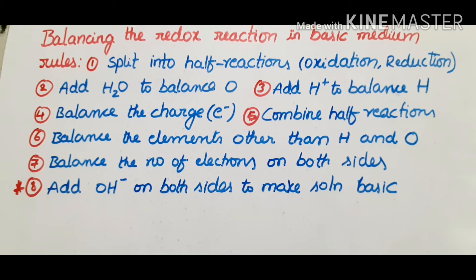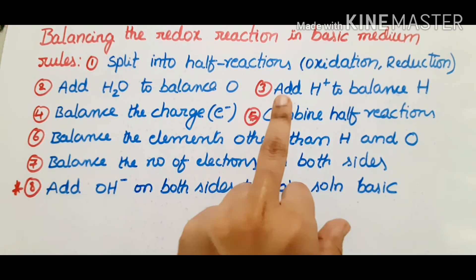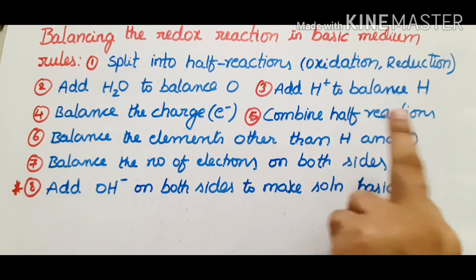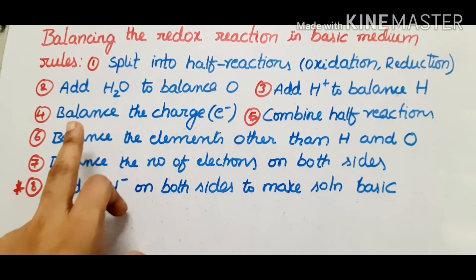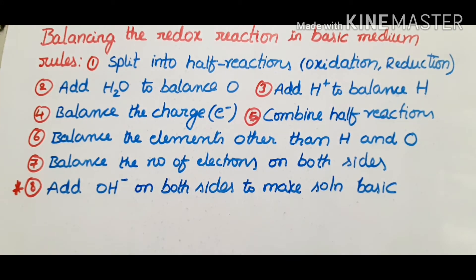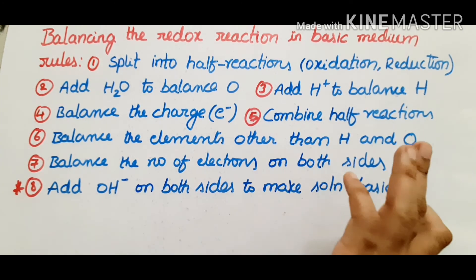First, you have to split into two half reactions. Next rule is add H2O to balance O. That side where you need to balance oxygen, you add H2O on that side. Then balance the charge with electrons — how many electrons are transferred, you have to look into that. Then combine the half reactions.